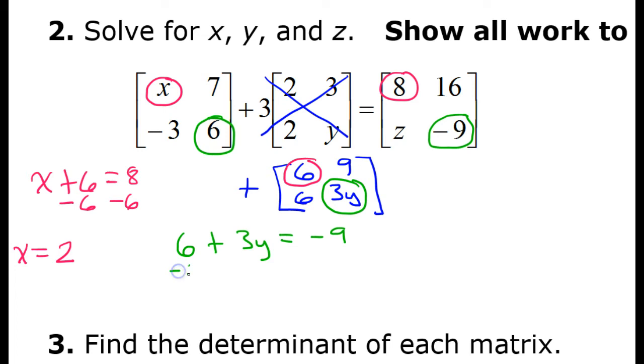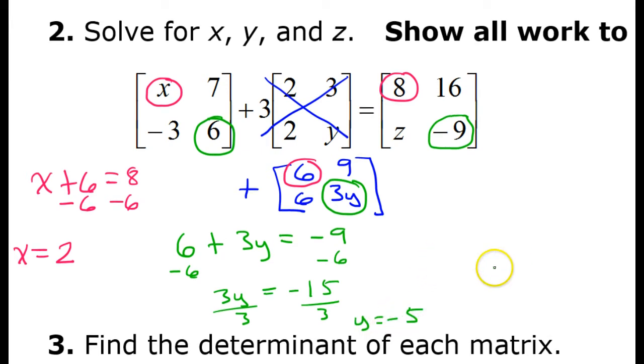So we would subtract 6 from both sides. So that's going to give us 3y is equal to negative 15. And then we would divide both sides by 3. And we would discover that y is equal to negative 5. So y is equal to negative 5.